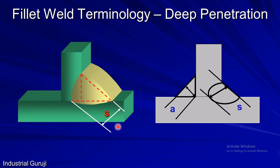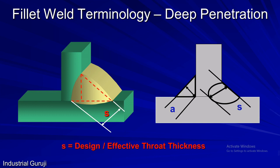For deep penetration fillet welds, design and actual throat thicknesses are considered from the fusion point to the face, as shown here. To differentiate this type of weld from the previous one, the throat thickness is symbolized as S instead of A.